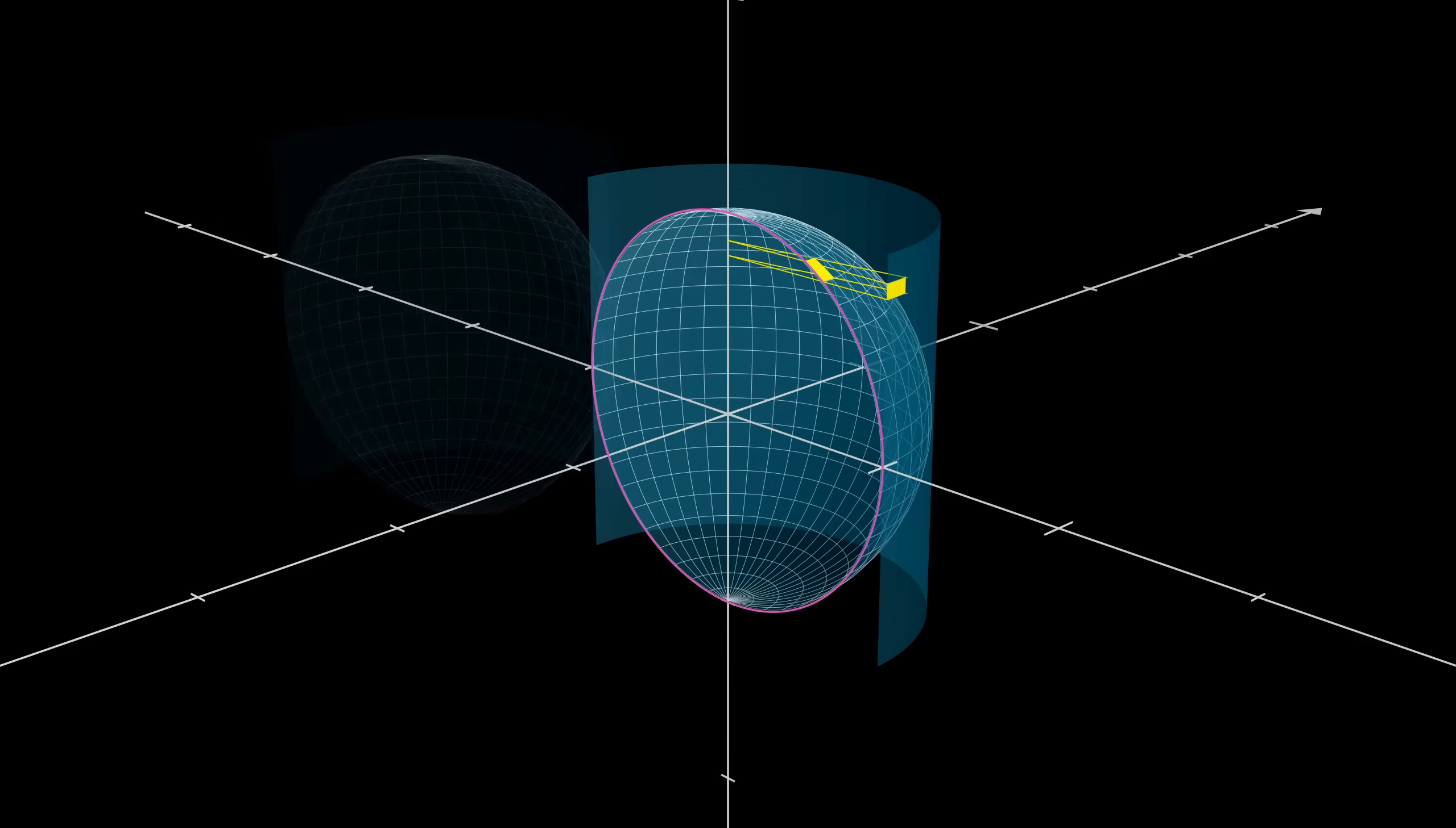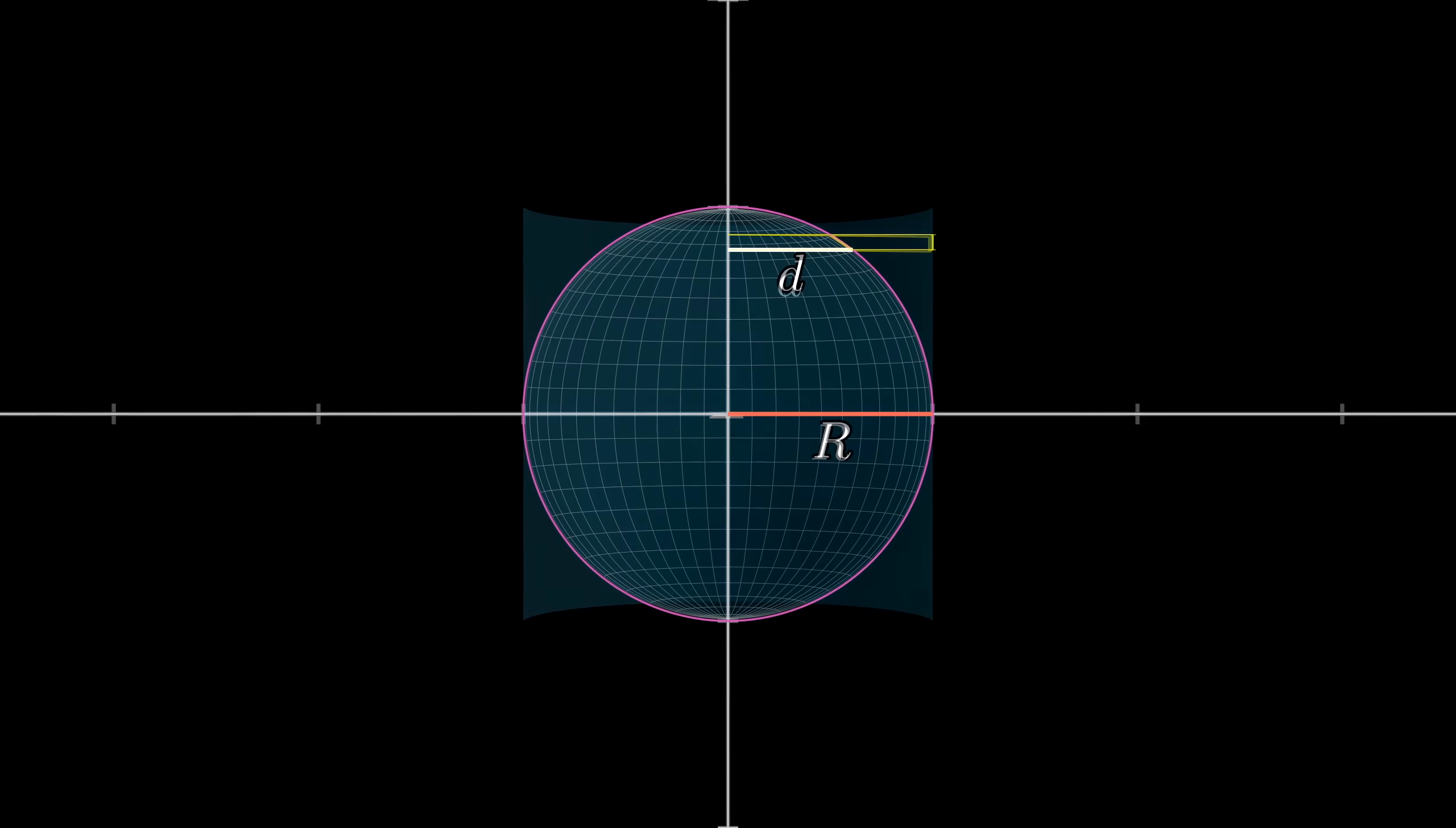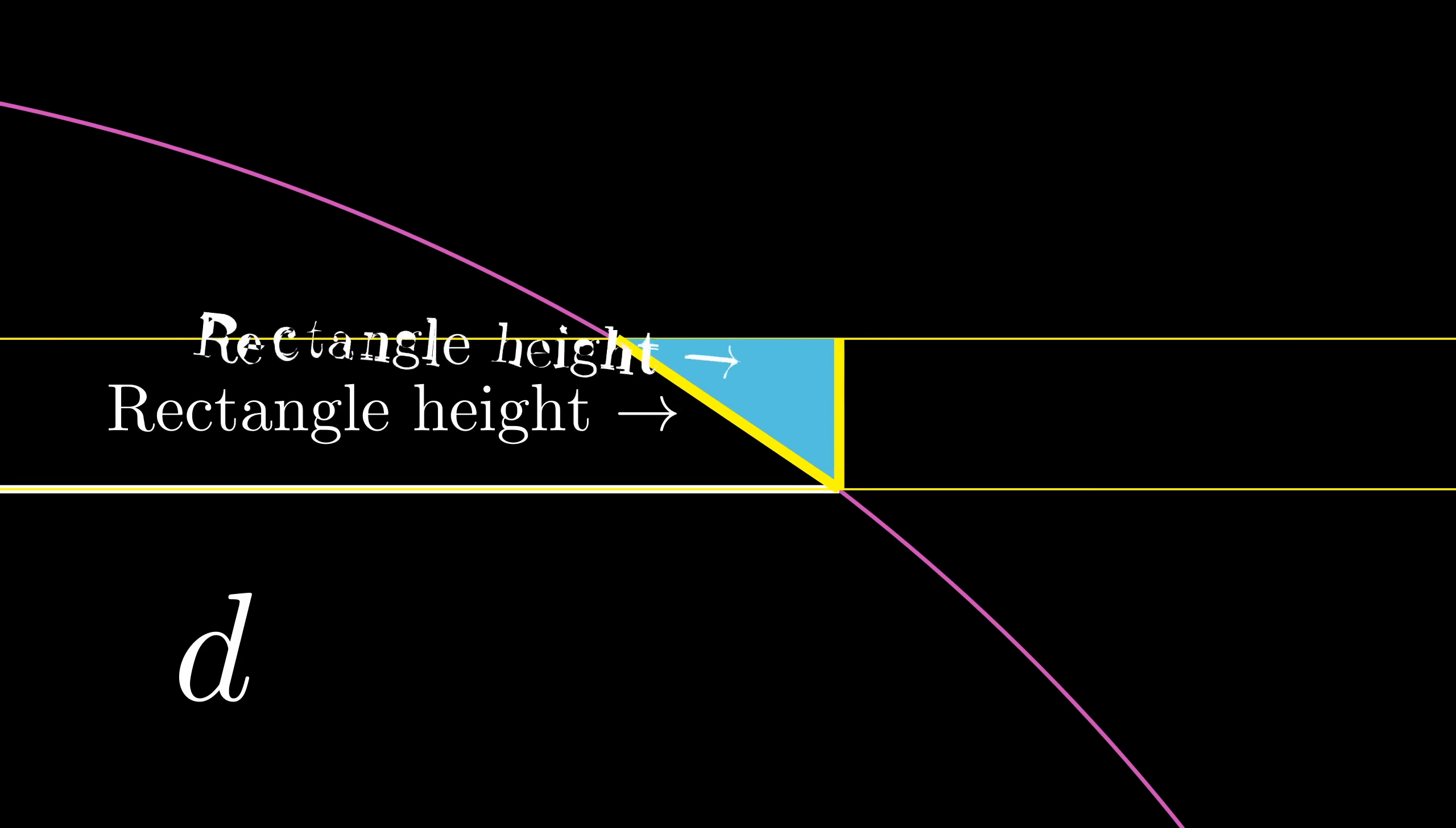Again, let's slice a cross-section for a cleaner view. And in fact, why don't we go ahead and completely focus our view to this two-dimensional cross-section. To think about the projection, let's make a little right triangle, like this. Where what was the height of our spherical rectangle is the hypotenuse, and the projection is one of the legs.